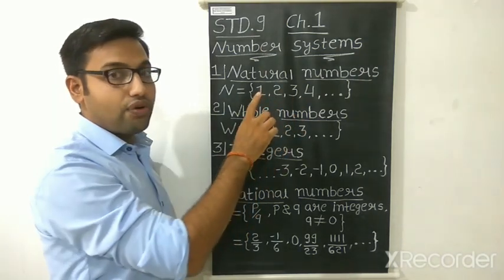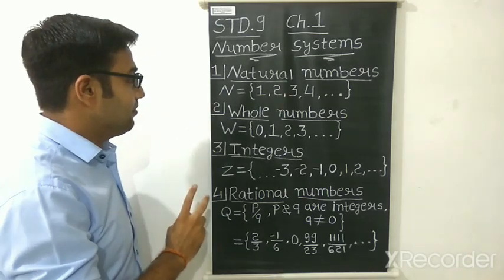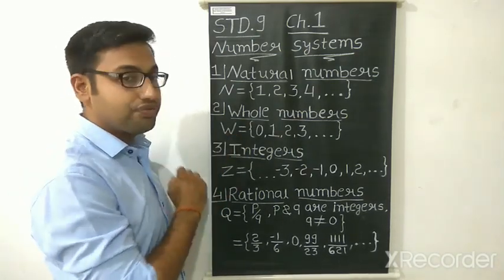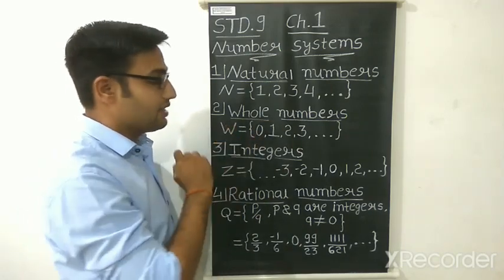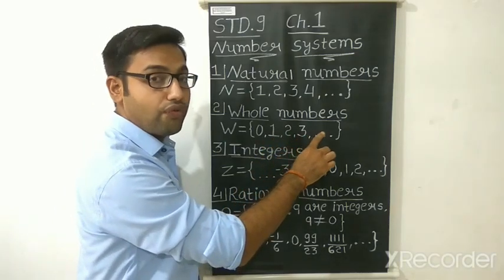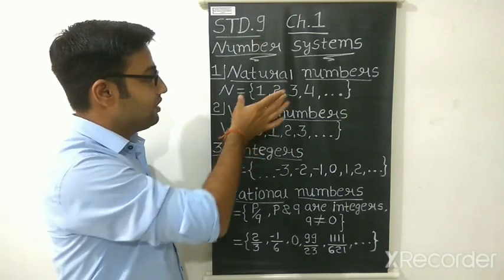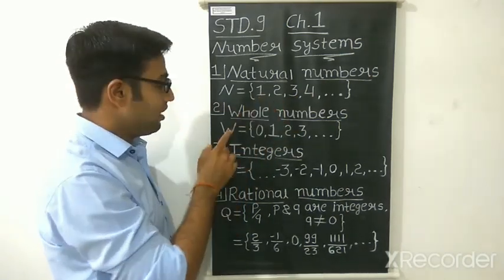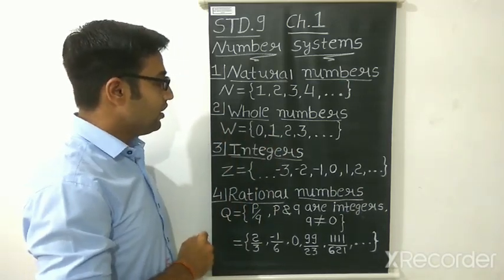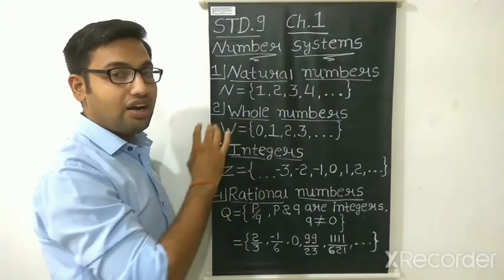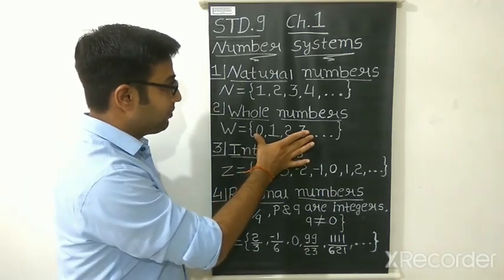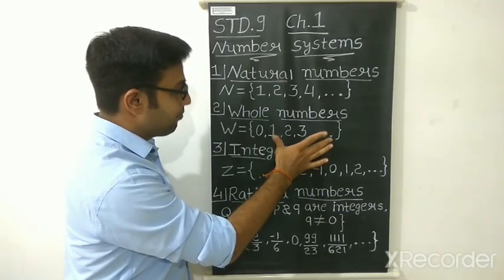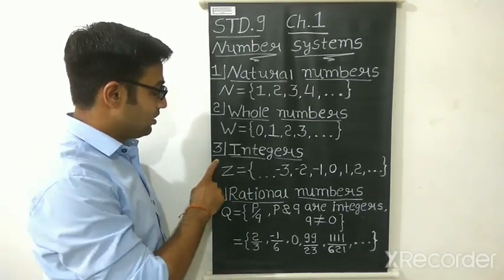The second number set is whole numbers, denoted by capital W. Members of this set are 0, 1, 2, 3, 4, 5, up to infinite. The difference between natural numbers and whole numbers is just one number: 0 is not in natural numbers, but it is in whole numbers. So we can say all natural numbers are whole numbers, but all whole numbers are not natural numbers, because 0 is not a natural number. Some of the whole numbers are natural numbers.